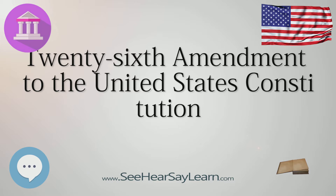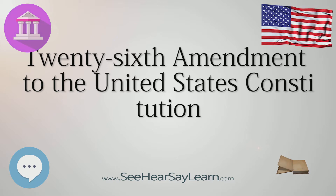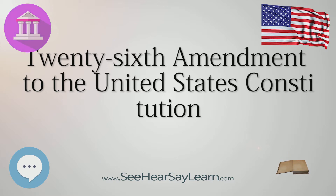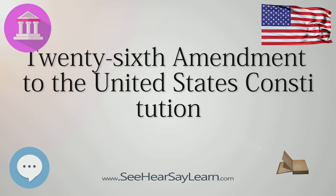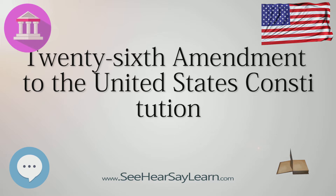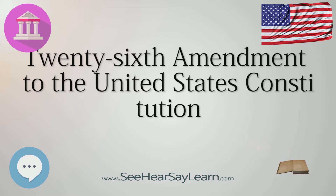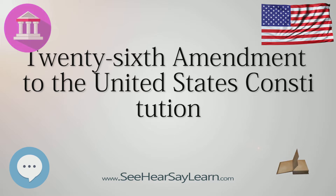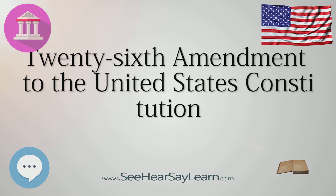The drive to lower the voting age from 21 to 18 grew across the country during the 1960s, driven in large part by the broader student activism movement protesting the Vietnam War. The impetus for drafting an amendment to lower the voting age arose following the Supreme Court's decision in Oregon v. Mitchell.